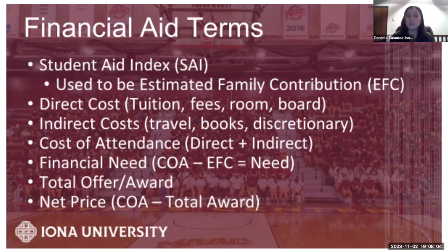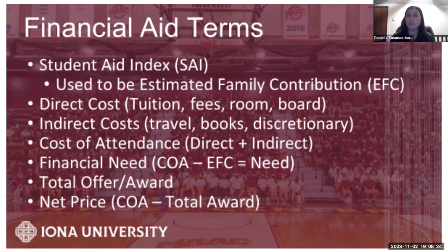The next thing is indirect costs, which refers to travel, books, and discretionary fees. Schools sometimes implement a book fee or make it optional. If you're looking at transportation to school, such as commuting, that's what is meant by travel cost. The cost of attendance is a simple formula: your direct costs plus your indirect costs equals your cost of attendance.